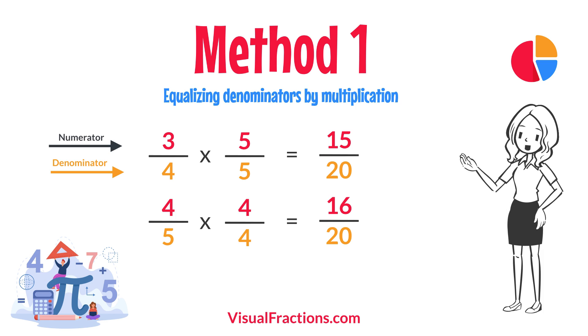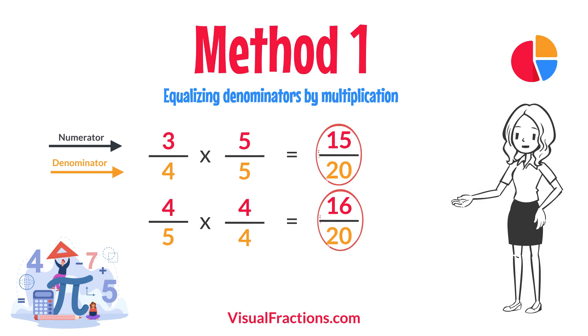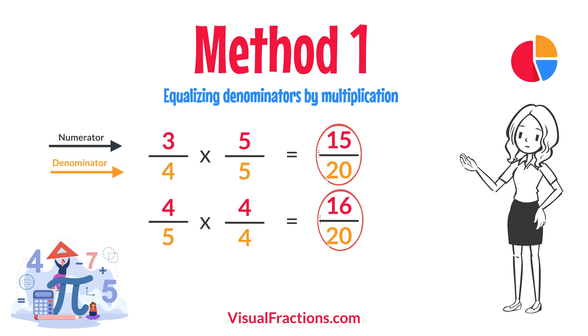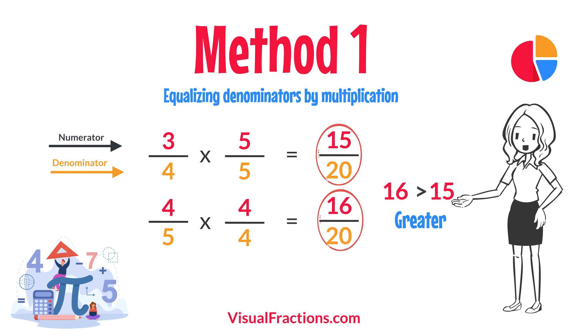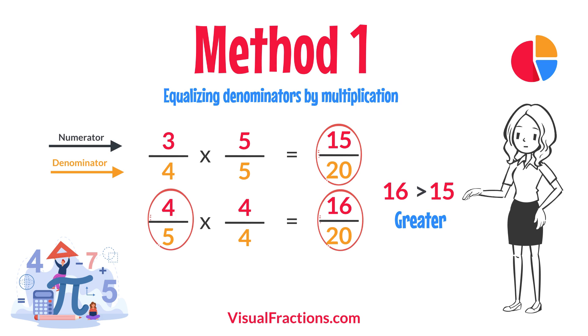Now, with both fractions expressed with a denominator of 20, we can easily compare them. 16 twentieths is greater than 15 twentieths, so 4 fifths is the larger fraction.